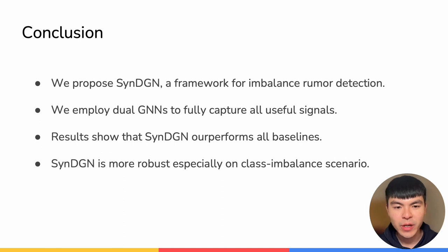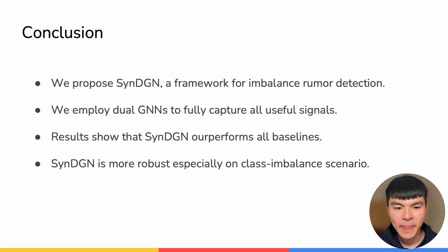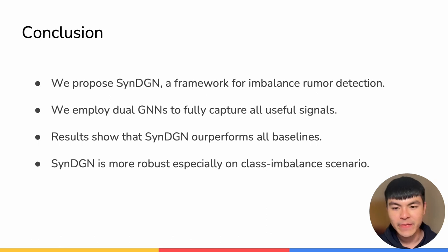In conclusion, we propose a framework called SynthDGN for imbalanced rumor detection. We employ two GNNs to fully capture all useful signals from users and from tweets. The experimental results show that SynthDGN outperforms all competitive baselines, and we also conduct analysis to show that SynthDGN is more robust, especially in class imbalance scenarios. Thanks for listening.